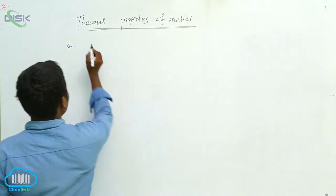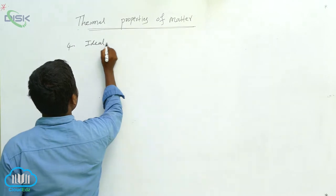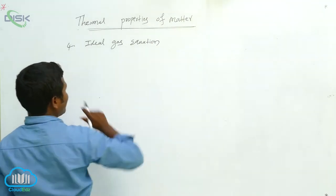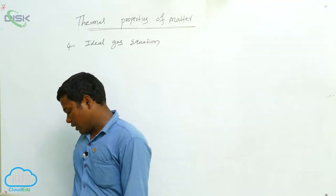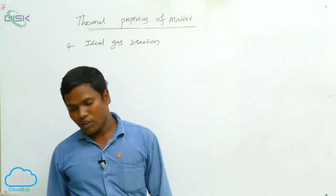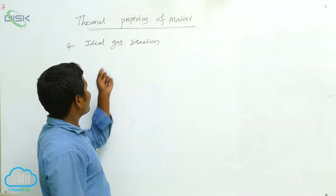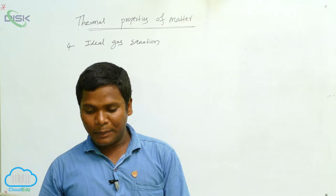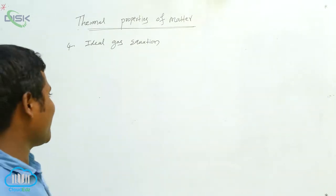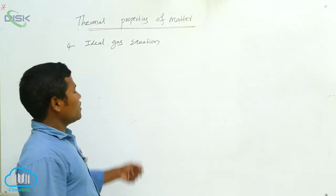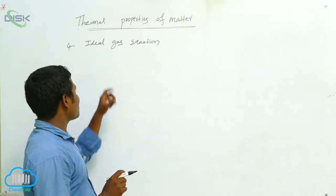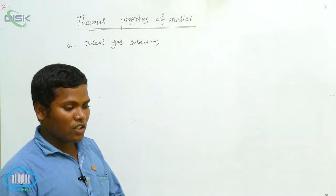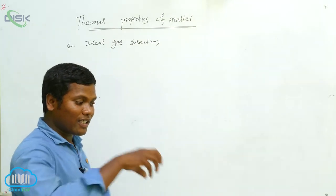The fourth topic is the ideal gas equation and absolute temperature or absolute zero. First, we will look at the gas. Matter can be divided into solid, liquid, and gas. Gas is made up of particles. How are the particles arranged in a gas? In a gas, the particles are at a very long distance from each other. For example, take a balloon, blow it up and tie it — gas is filled inside.